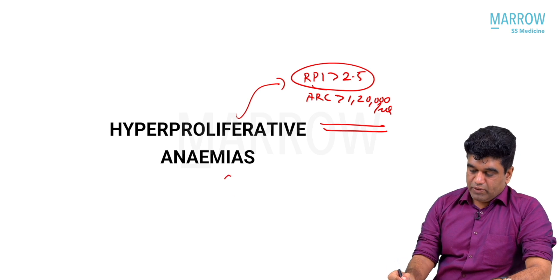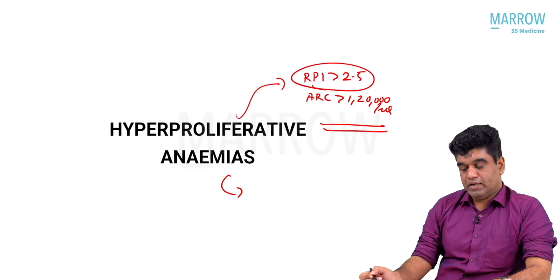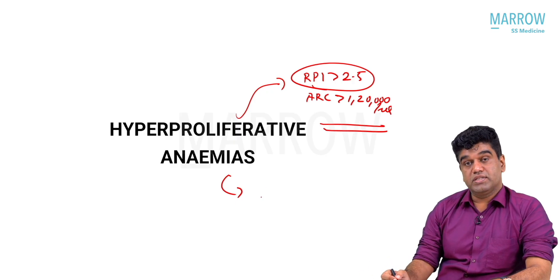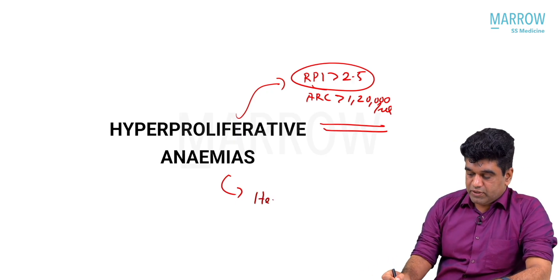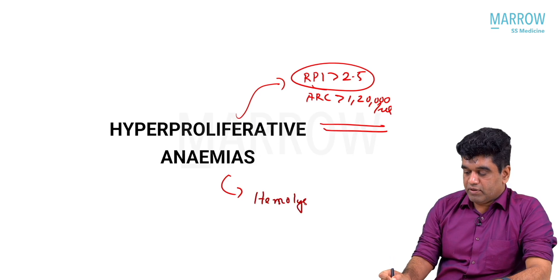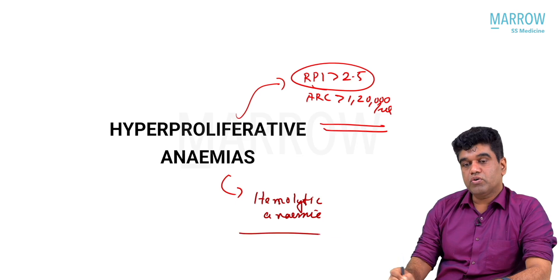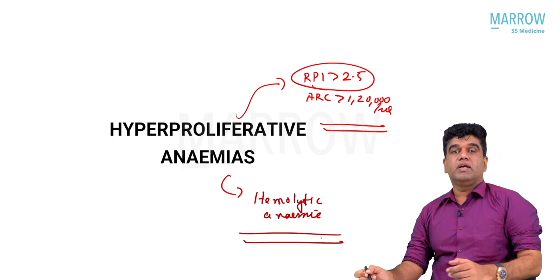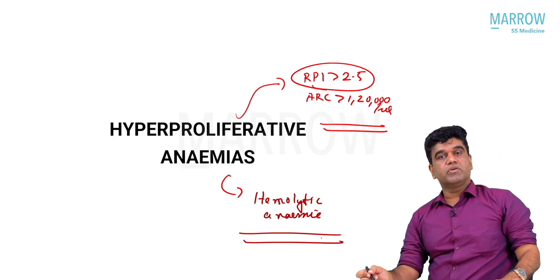Practically, you can take hyperproliferative anemia to be equal to hemolytic anemia, but remember that hyperproliferation is seen with blood loss also. For now, we are taking hyperproliferative anemia as equal to hemolytic anemia — hemolysis is what we are actually going to talk about. It is the destruction of RBCs that we are going to discuss.